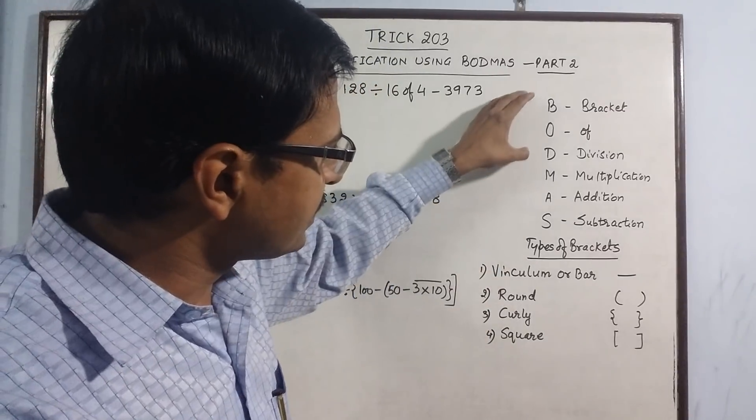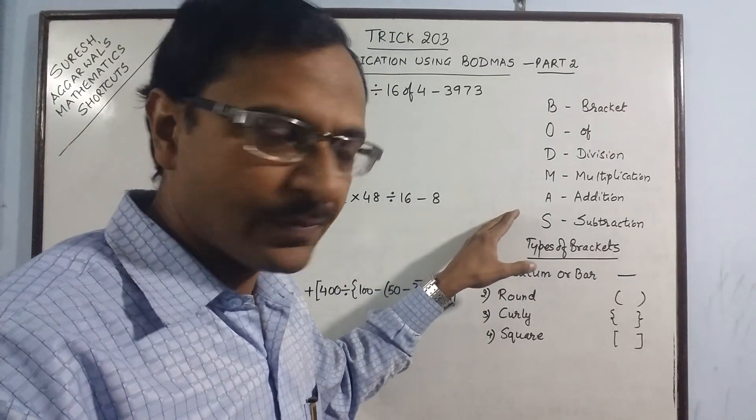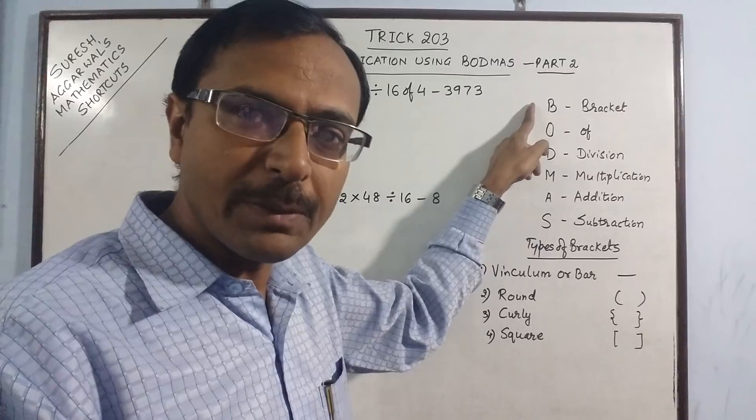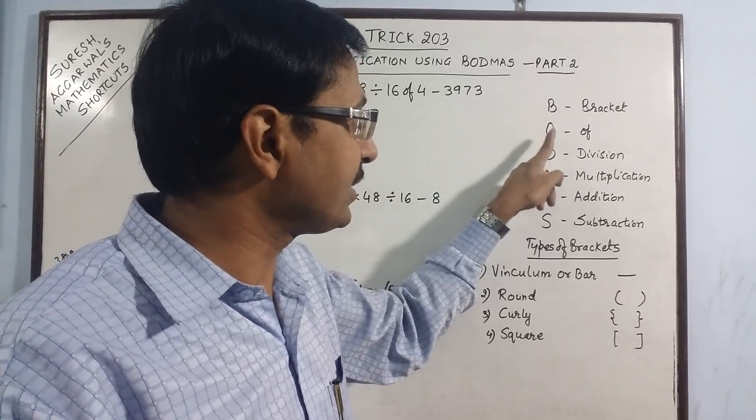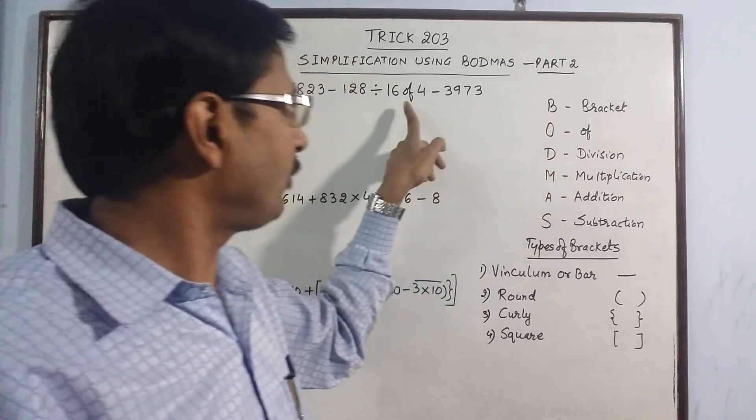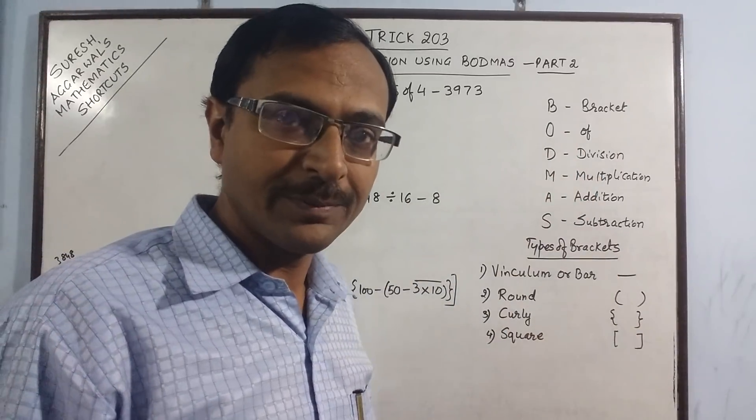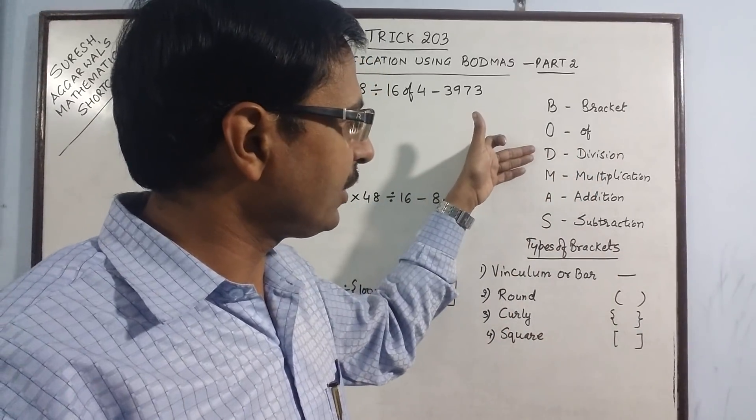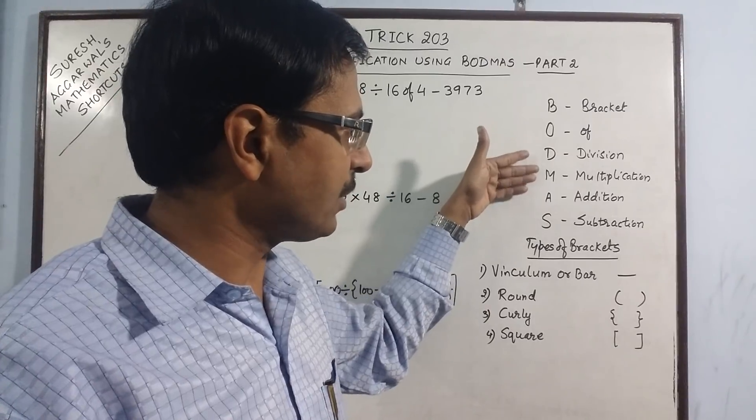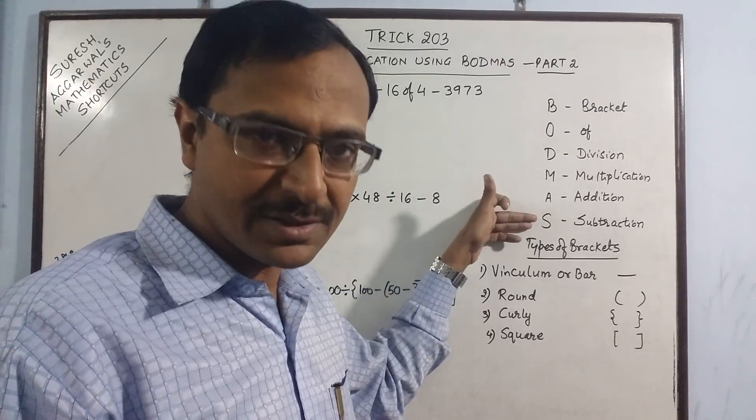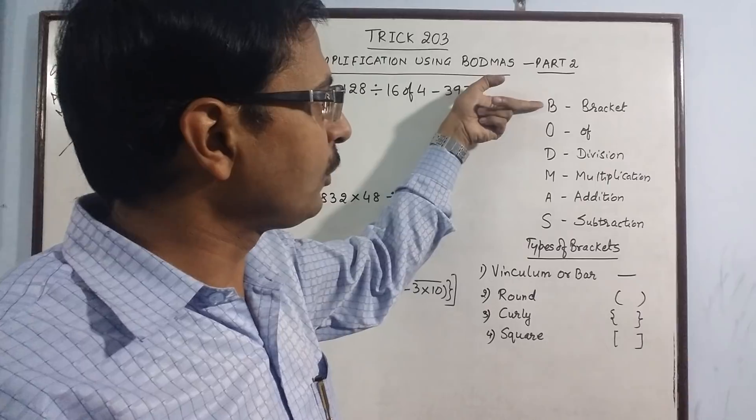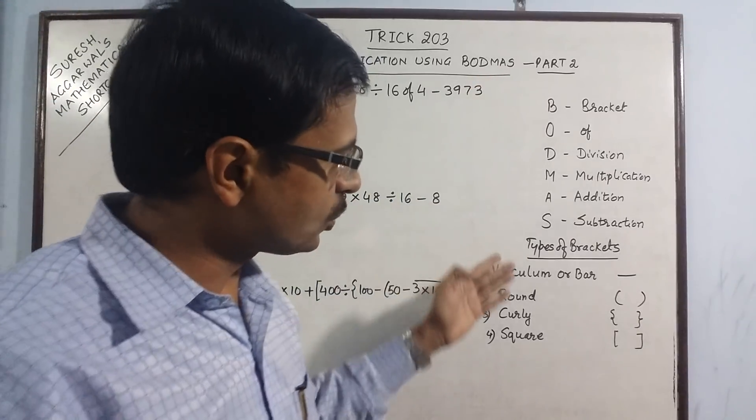This is the sequence of operations: first of all you have to remove the bracket, then if there is an 'of' in the calculation then you have to remove that 'of', then followed by do the operation of division first, then multiplication, then addition, and then subtraction.